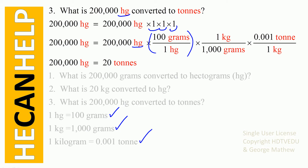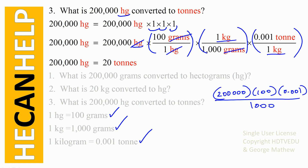Now we have our answer in grams. From grams we go to kg: we multiply by 1 kg divided by 1,000 grams so that grams cancel out, giving our answer in kg. Then to get rid of kg, we multiply by 1 again with kg at the bottom. So 200,000 times 100 divided by 1,000 times 0.001, which equals 20 tons.